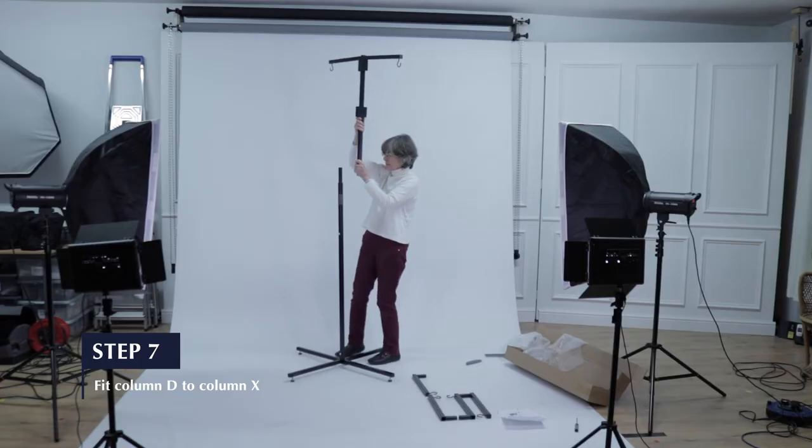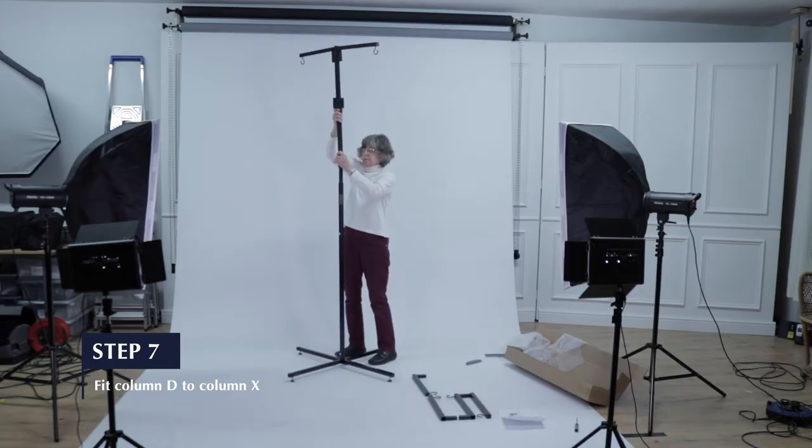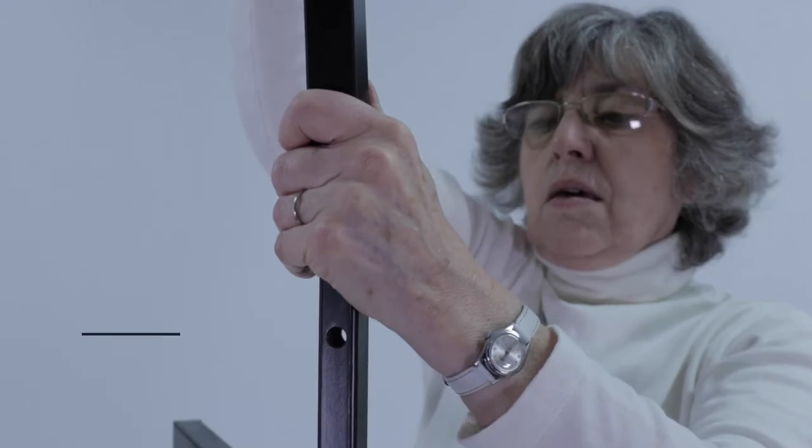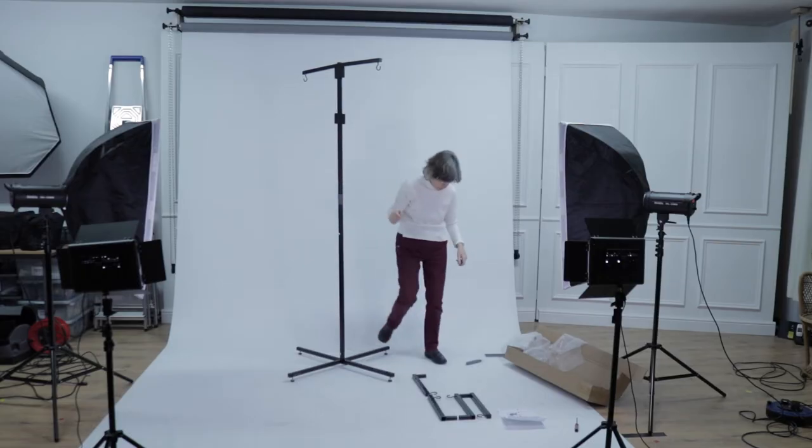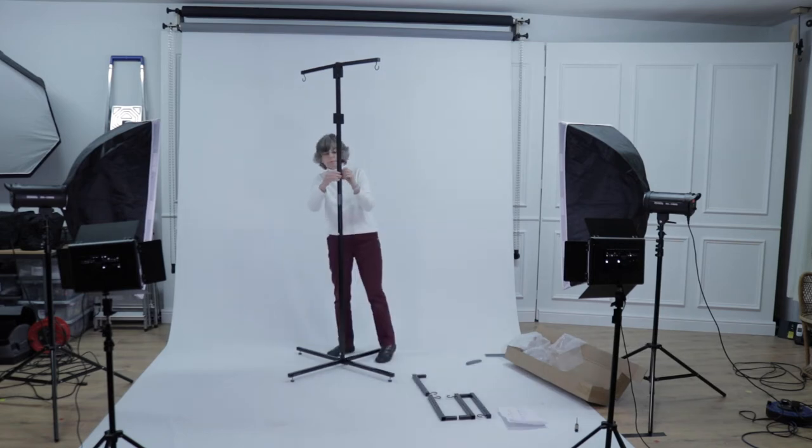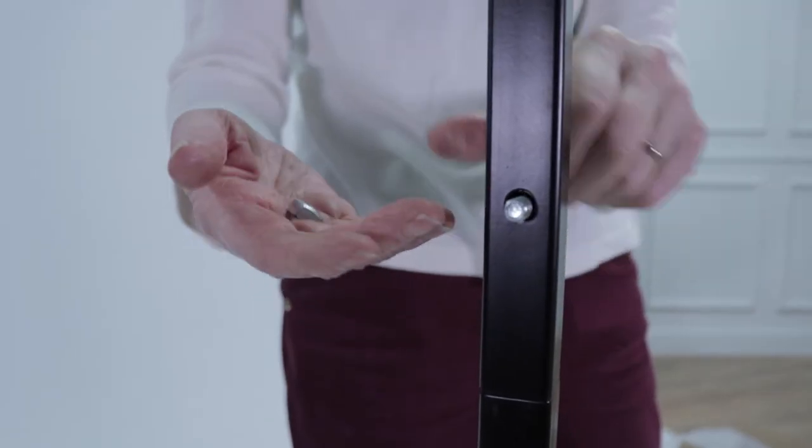Step 7. Now fit upper column D with the two hook arms attached onto extension column X. As before, make sure the holes line up before fitting bolt F and attaching the nut.